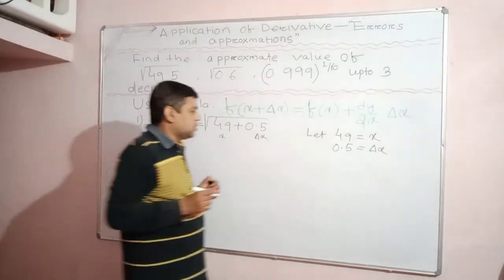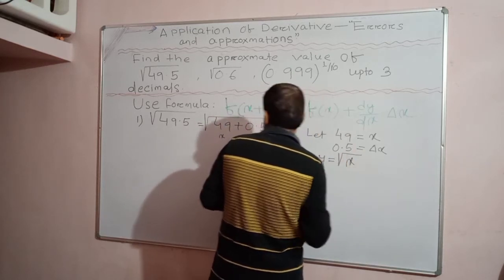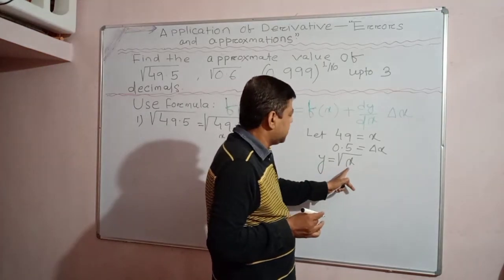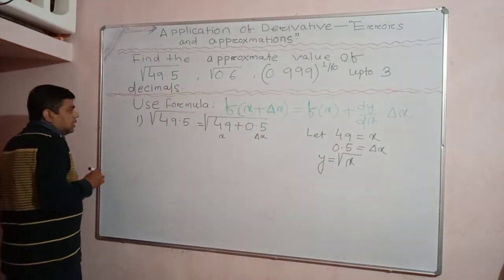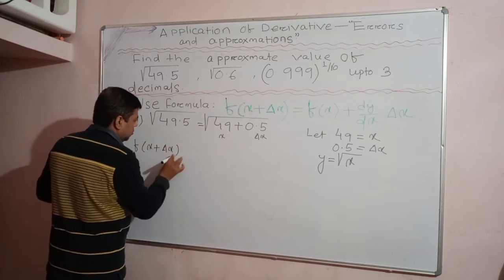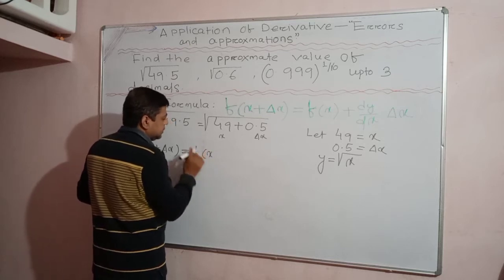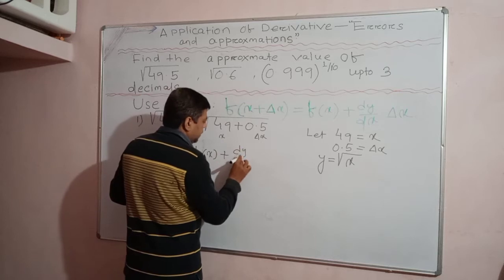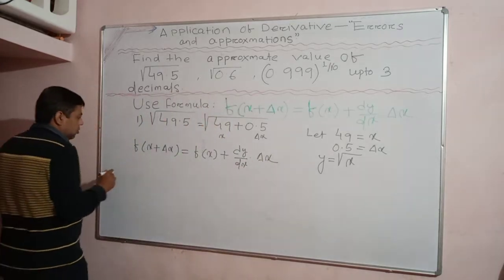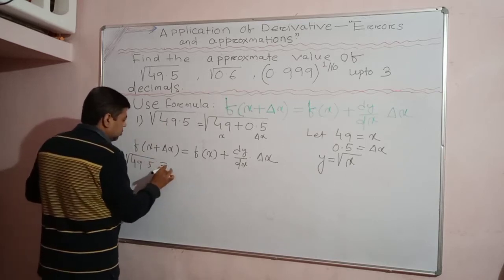The function y = f(x) = √x, since there is a square root. Now applying the formula, f(x + Δx) = f(x) + (dy/dx)·Δx. So √49.5 = f(49 + 0.5) = f(x) + (d/dx)(√x)·Δx, where f(x) = √49.